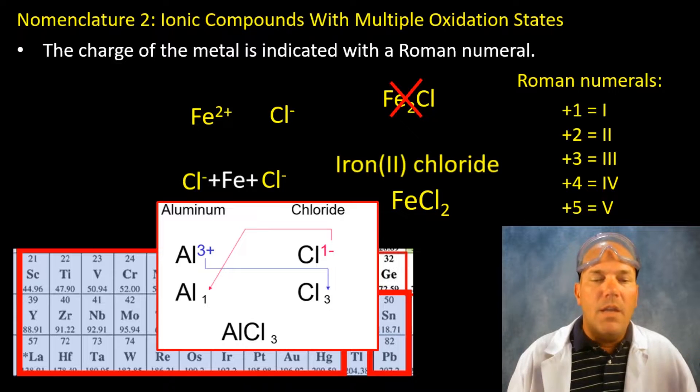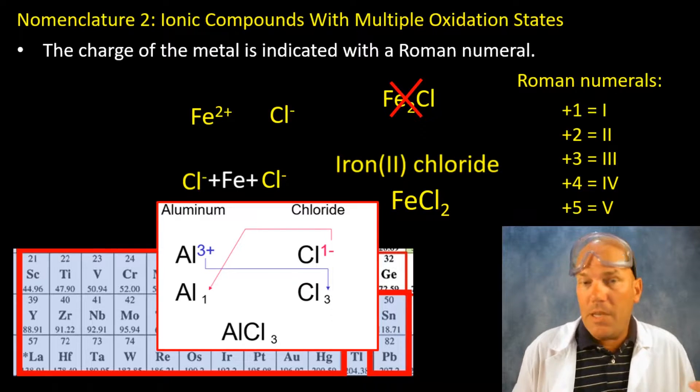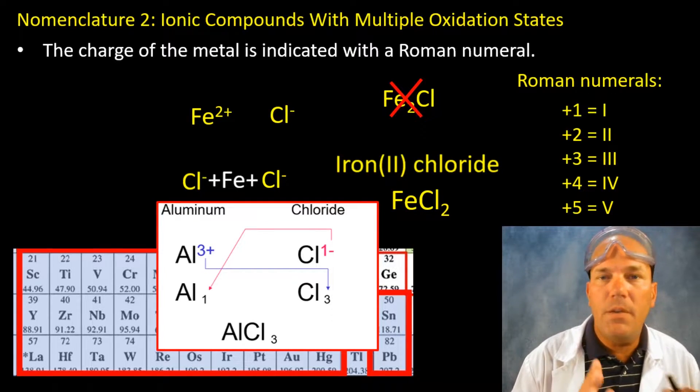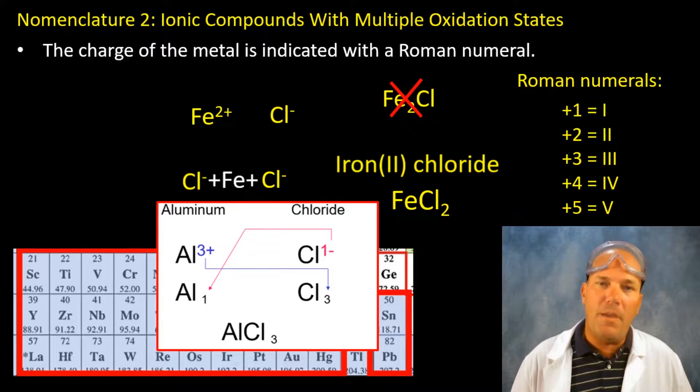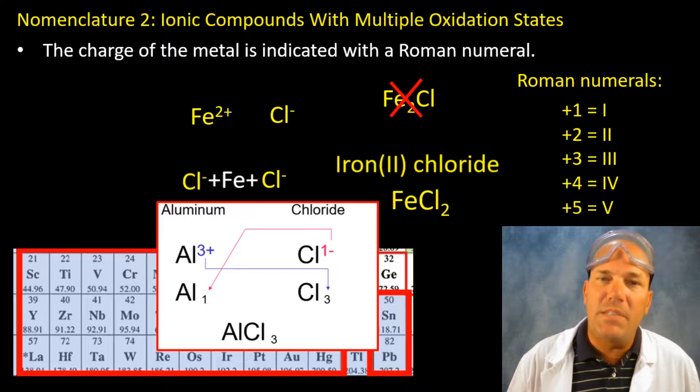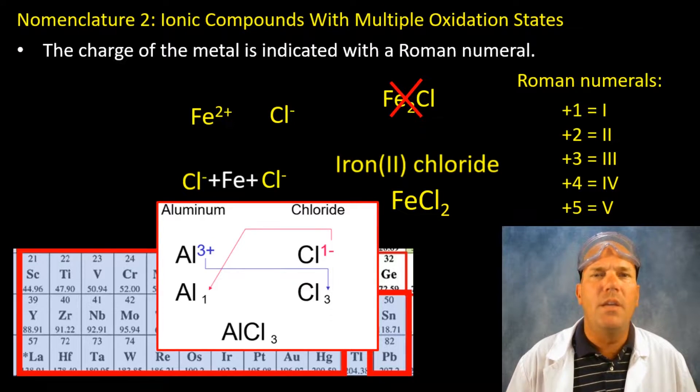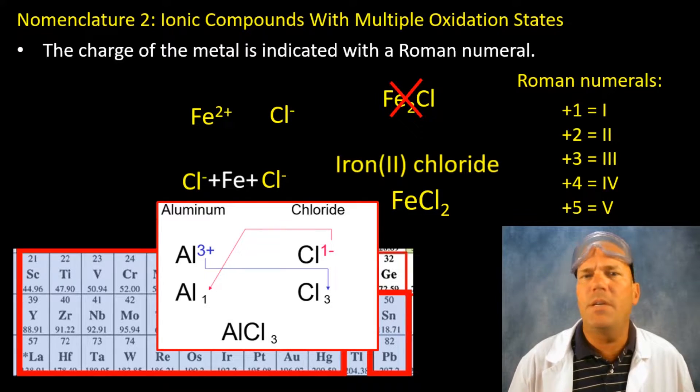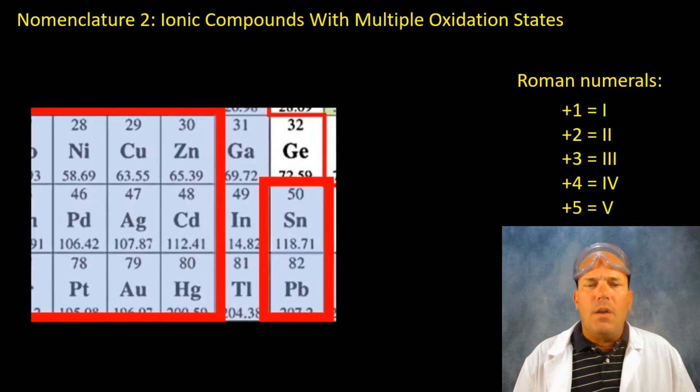And aluminum chloride, notice I didn't say aluminum three. And you might say why? Please take a moment, pause the video, get out your periodic table and note that aluminum is in a family with fixed oxidation state. It has a charge of plus three. So we don't use roman numerals to indicate the charge because there's only a single charge.